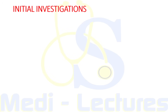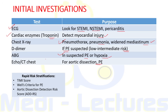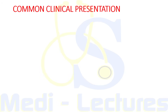For initial investigations, order an ECG first to look for cardiac causes like STEMI, NSTEMI, and pericarditis. Order cardiac enzymes if ECG is supportive of ischemia to detect myocardial injury. Chest X-ray to rule out pneumothorax, pneumonia, or widened mediastinum. D-dimer if pulmonary embolism is suspected, and calculate Wells score. ABG in suspected PE or hypoxia. Echo and CT chest for aortic dissection and embolism. Risk stratification scores like TIMI score, Wells score, and aortic dissection detection risk score support but do not replace clinical judgment.